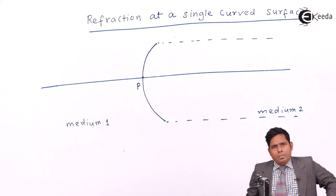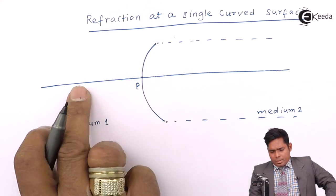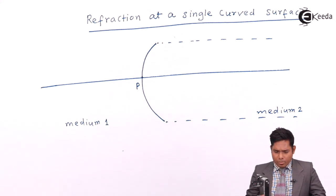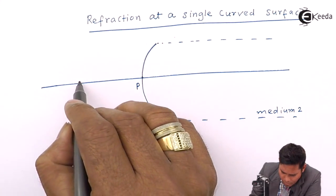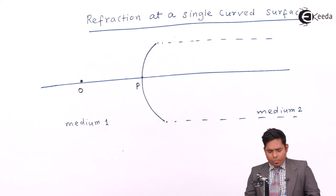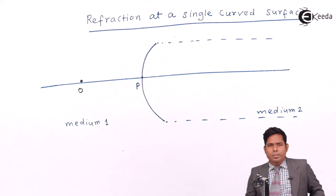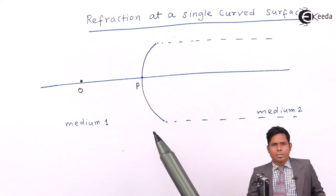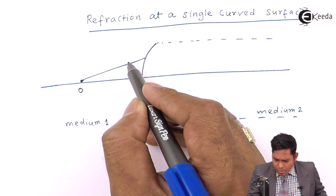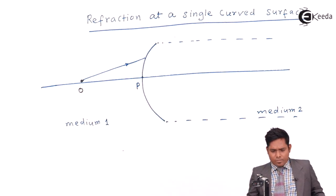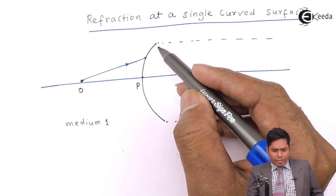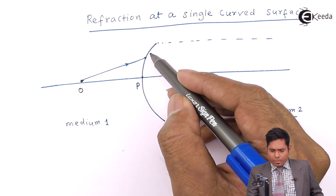Now consider a point object on the principal axis. The ray has to travel from left to right, so I will consider a point object over here. From the object, the ray will travel in all possible directions, but I will consider one ray which is moving like this. This ray strikes the curved surface at a point — suppose this point is A.